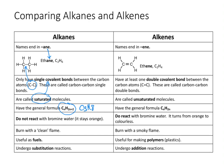Moving on to alkenes — just like alkanes, their names all end in '-ene' (E-N-E), giving us the example of ethene. Ethene has two carbon atoms, just like ethane — 'eth-' means two carbon atoms. We can also see that the alkene has a double covalent bond, which looks like an equal sign between two carbon atoms.